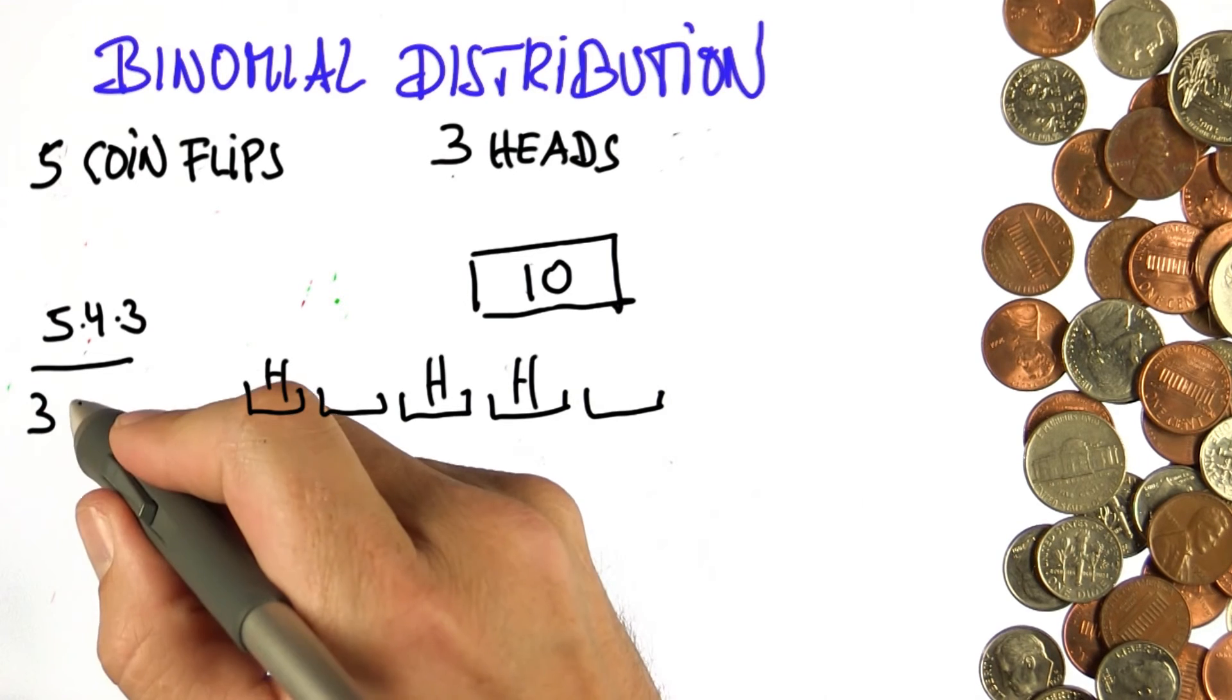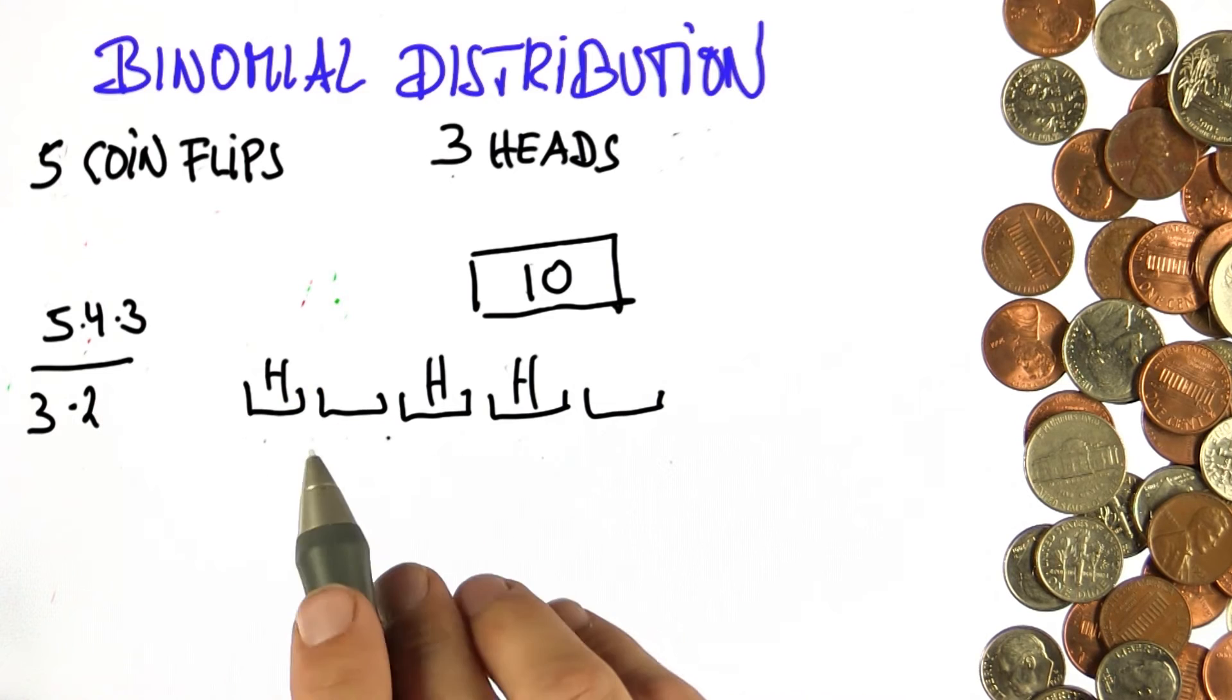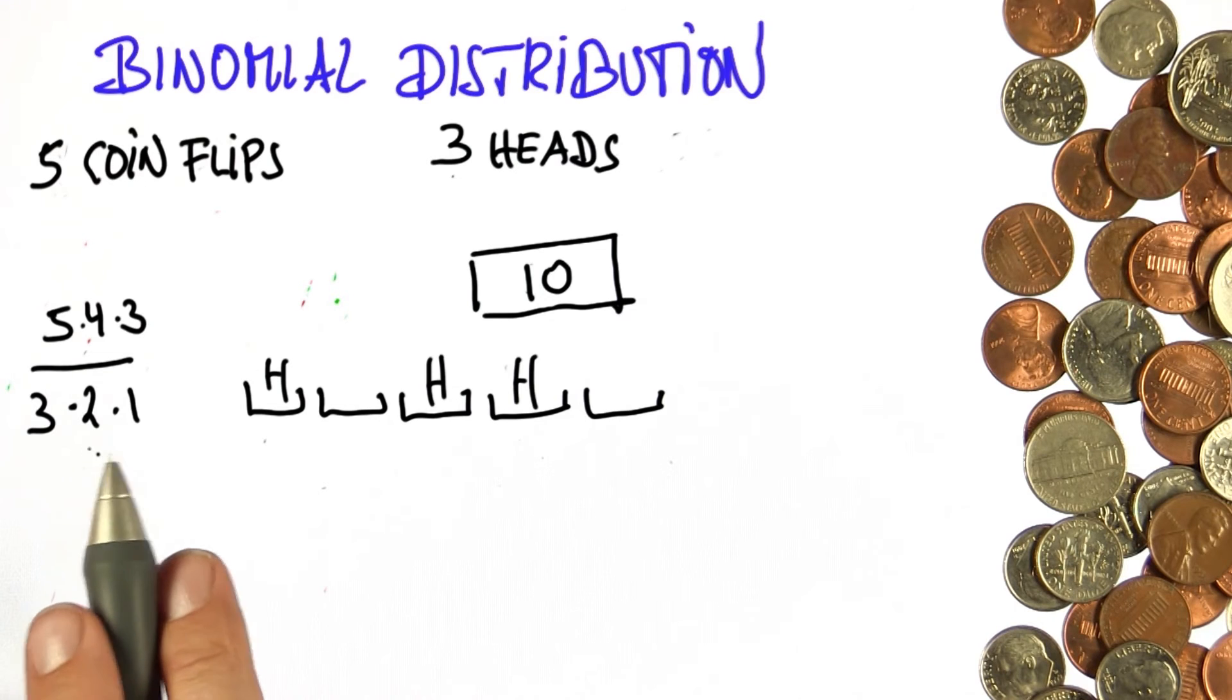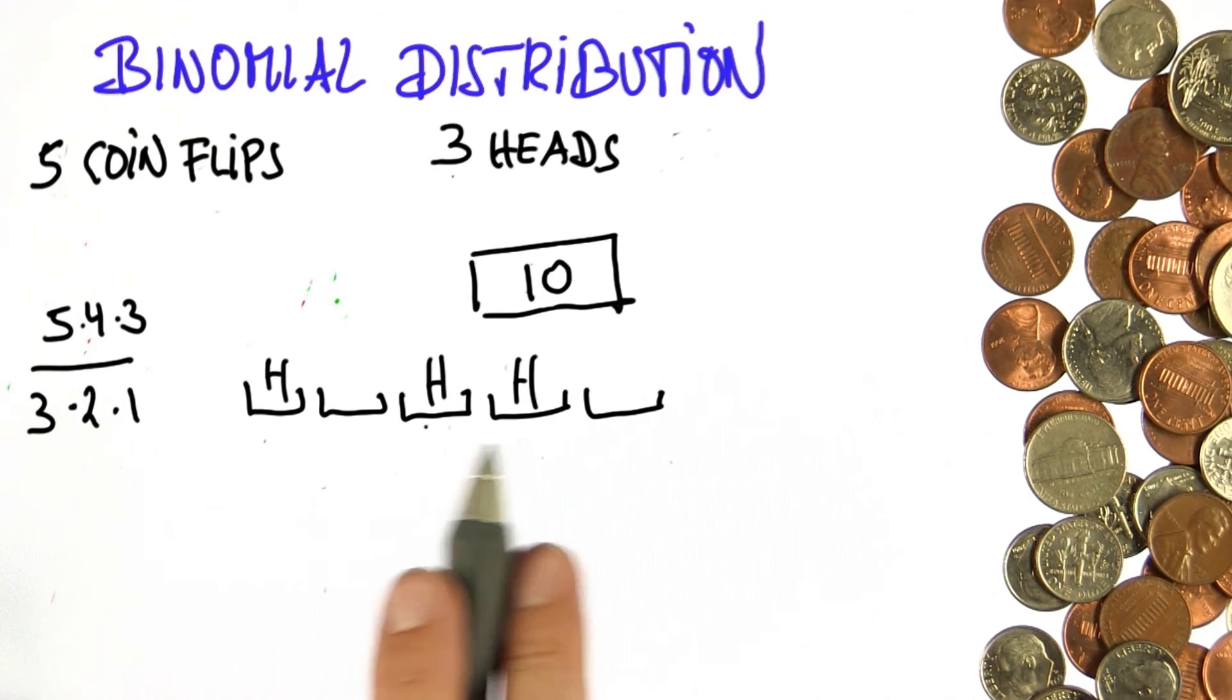For the second one, there's two different ways of placing it. For the third one, it's not deterministic. There's just one slot left. So I over-counted by a factor of six. There are six different ways of placing these three heads into these three slots.